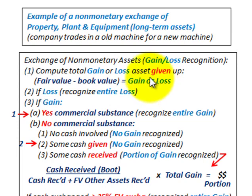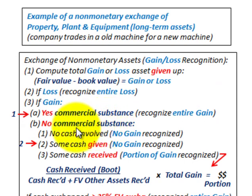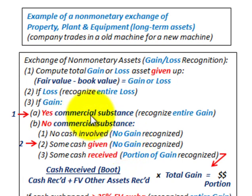We're going to look at a gain here, and there are two situations. First, where the transaction has commercial substance — that's where we recognize the entire gain. Then the other case where there is no commercial substance — that's where some cash is given but no gain is recognized. Commercial substance means the exchange has some effect on our future cash flows.